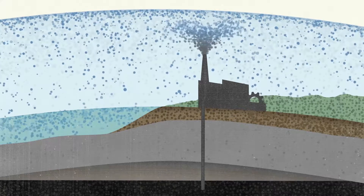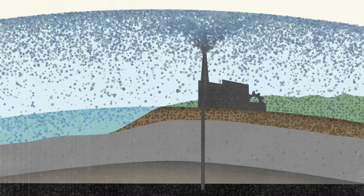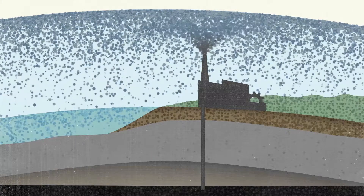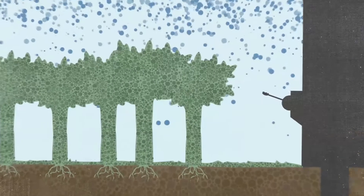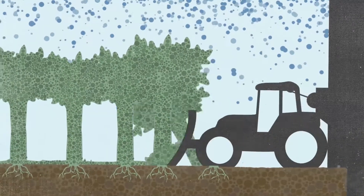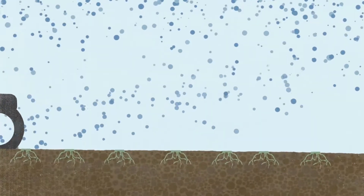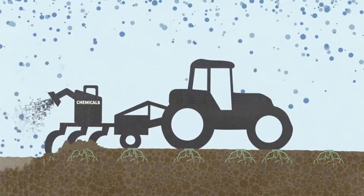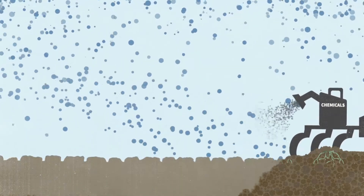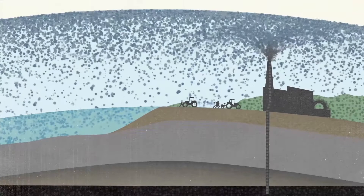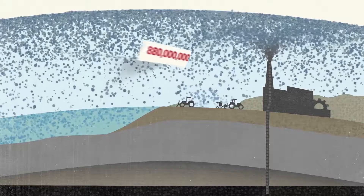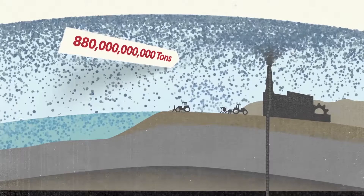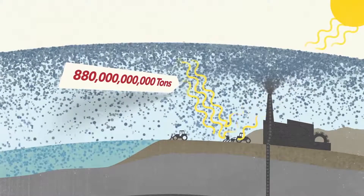Oil. Then we burned it for energy, releasing it into the sky, interrupting the cycles that nature designed to keep it in balance. The way we have managed commercial agriculture, we have been moving even more carbon from the soil and the biosphere into the atmosphere — specifically, we have moved 880 gigatons of carbon dioxide into the atmosphere, which is heating up our planet and destabilizing our climate.